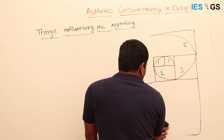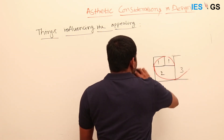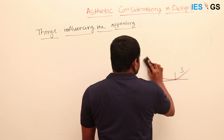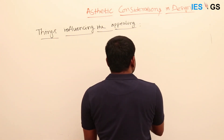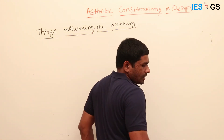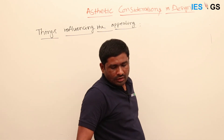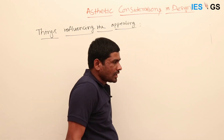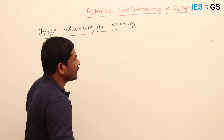We know different forms and we know how a line can change the feeling or emotion of a viewer. We have also seen what the golden ratio is.